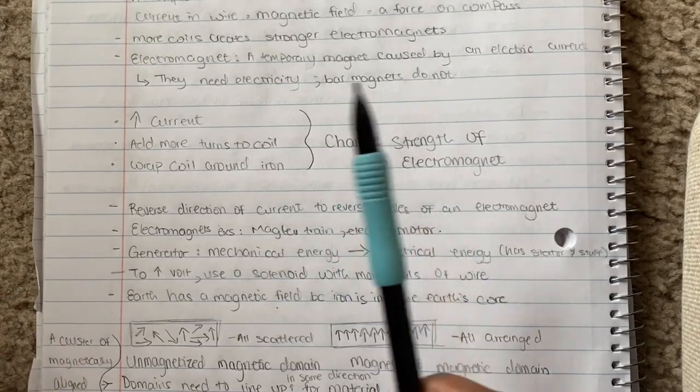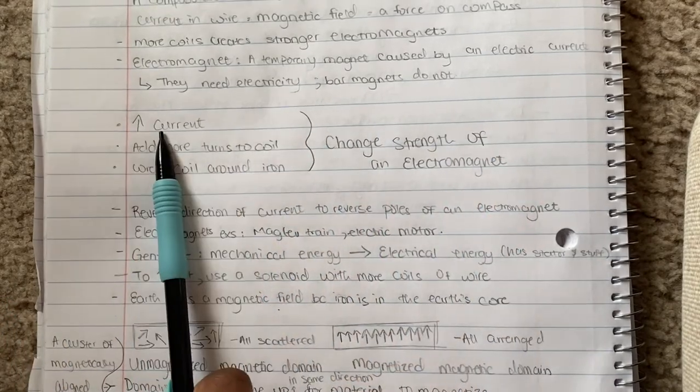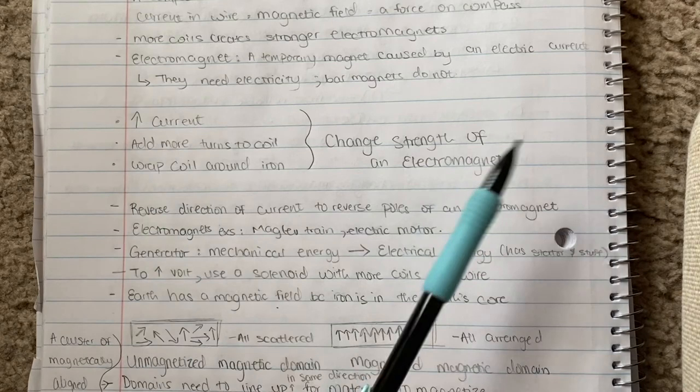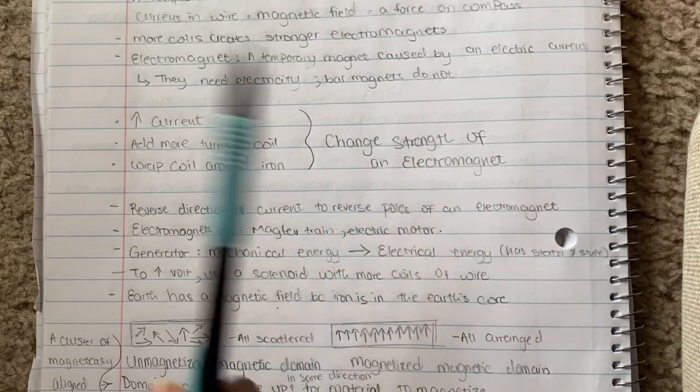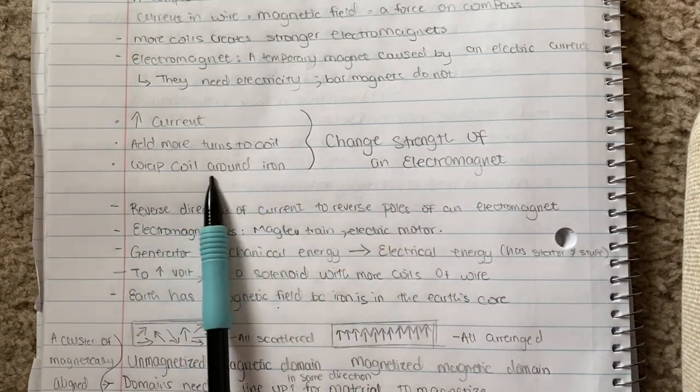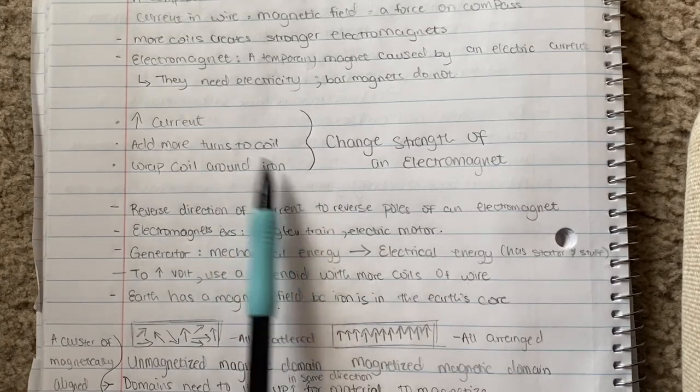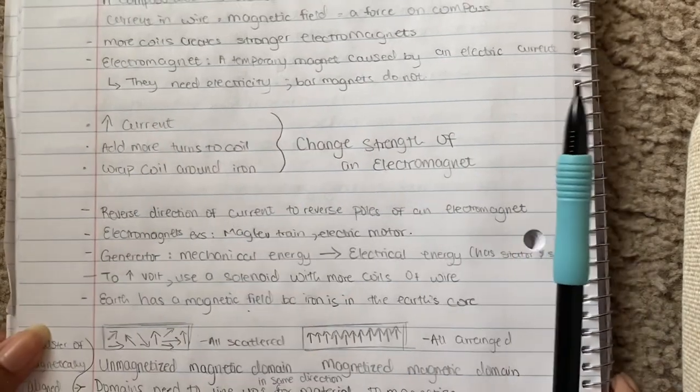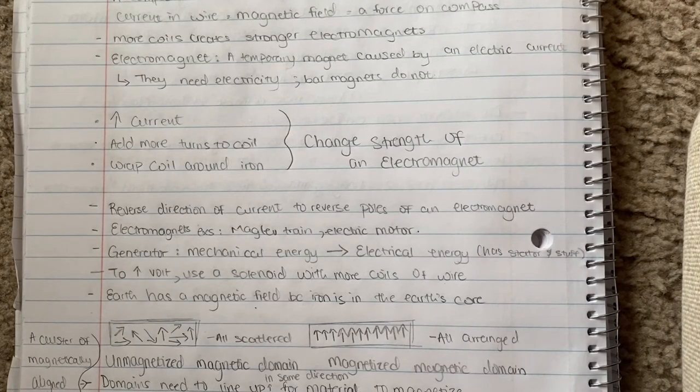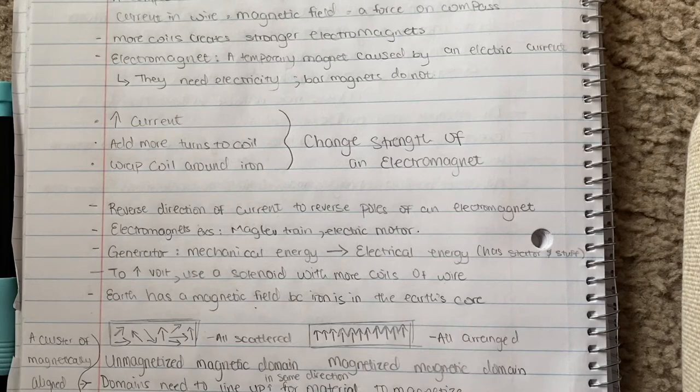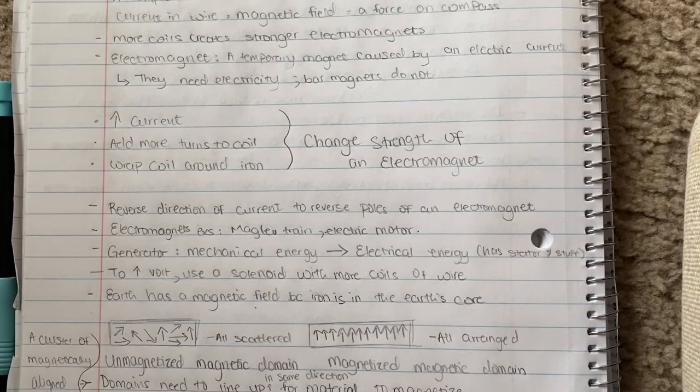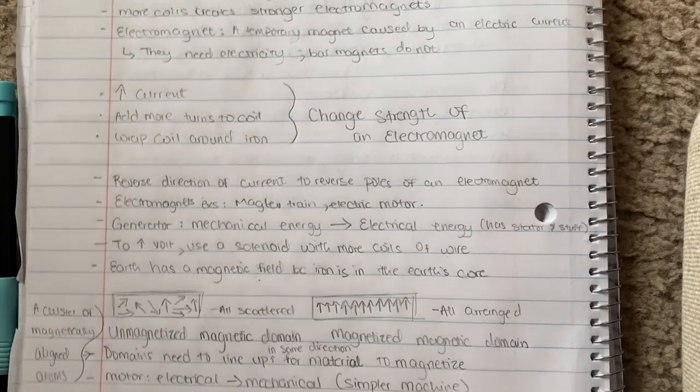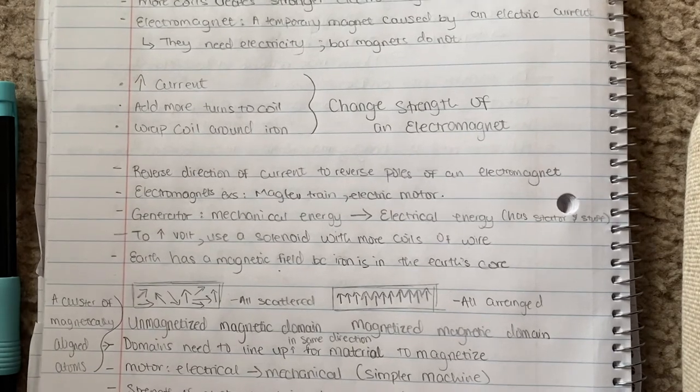More details on changing the strength of an electromagnet: if you increase the current, you're going to increase your strength. If you add more turns to coils and you wrap your coil around iron, iron gets magnetized. It's one of the best choices when making an electromagnet. Iron does a pretty good job at helping increase the strength of your electromagnet.